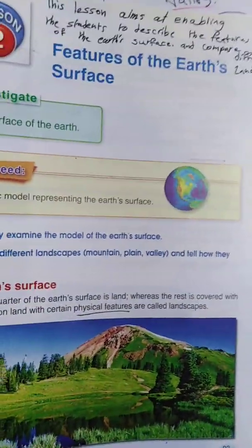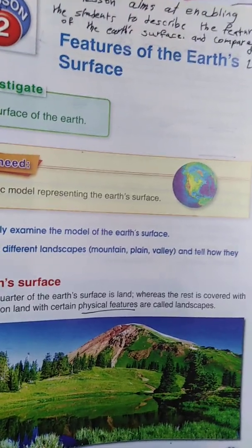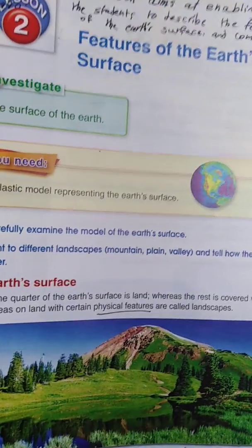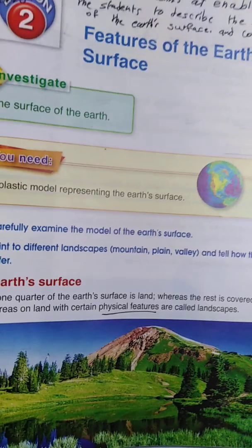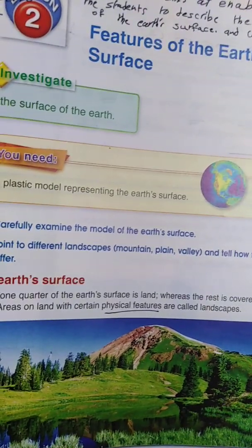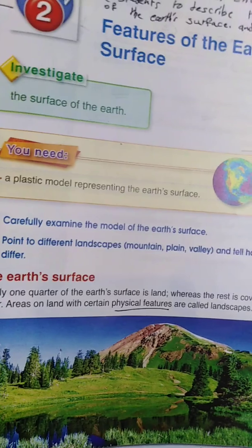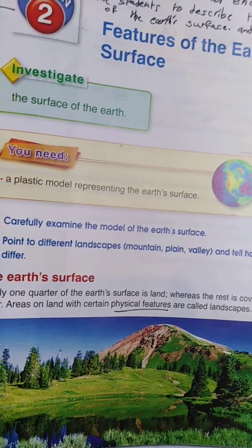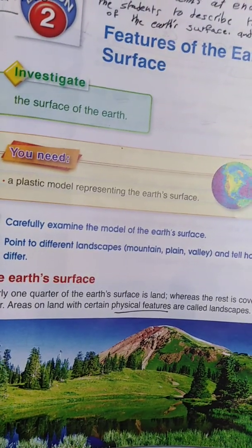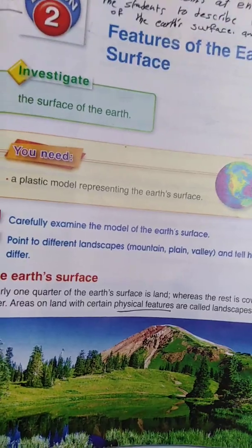We have a lot of colors. We talked about it in the previous lesson about the colors of the earth. Blue means seas and oceans, green for plants, and brown for land.